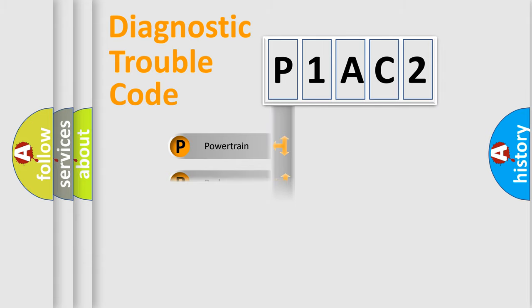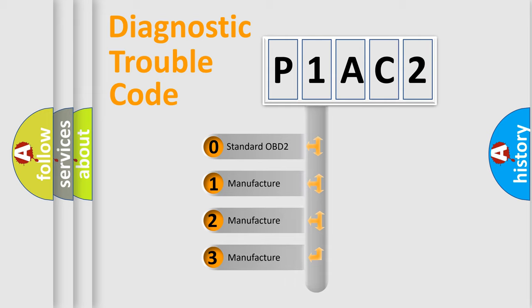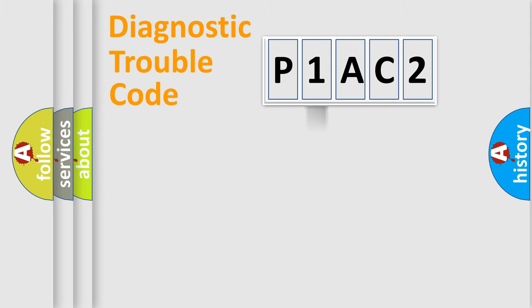Powertrain, Body, Chassis, Network. This distribution is defined in the first character code. If the second character is expressed as zero, it is a standardized error. In the case of numbers 1, 2, 3, it is a manufacturer-specific error.